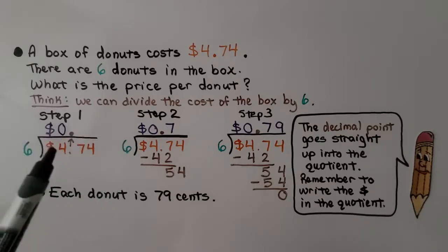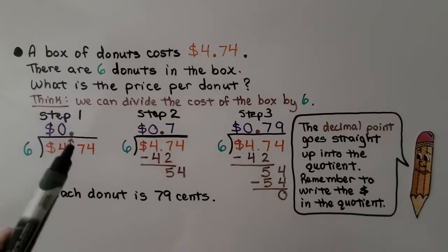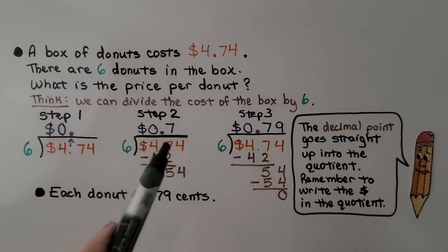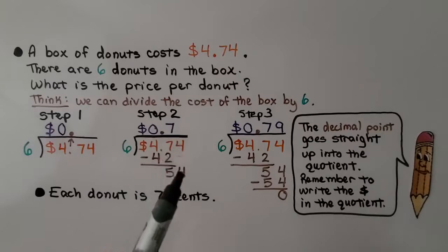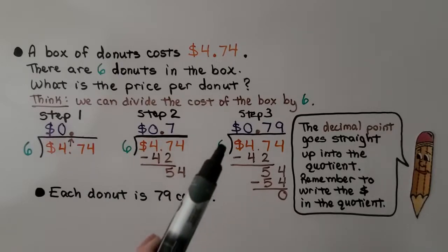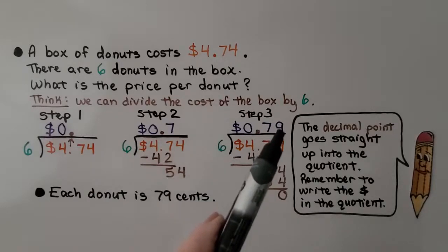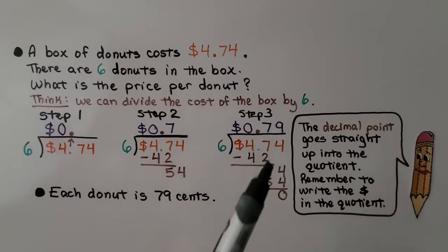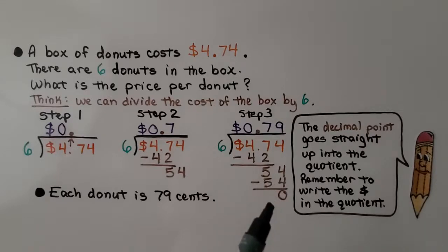We've got our decimal point going straight up. 6 fits into 47 seven times, because 6 times 7 is 42. We subtract and get a 5. It's the 4's turn to come down. How many times does 6 fit into 54? 6 fits into 54 nine times, because 6 times 9 is 54. We put a 9 up here. We do 6 times 9 is 54 and then subtract it and get a 0 remainder. We know that each donut is 79 cents. The decimal point goes straight up into the quotient. Remember to write the dollar sign in the quotient, because this is money.